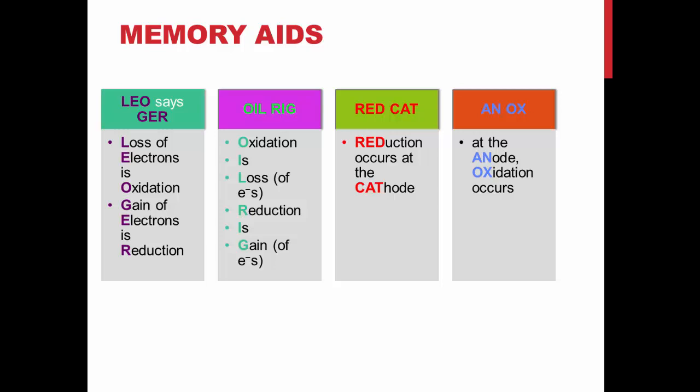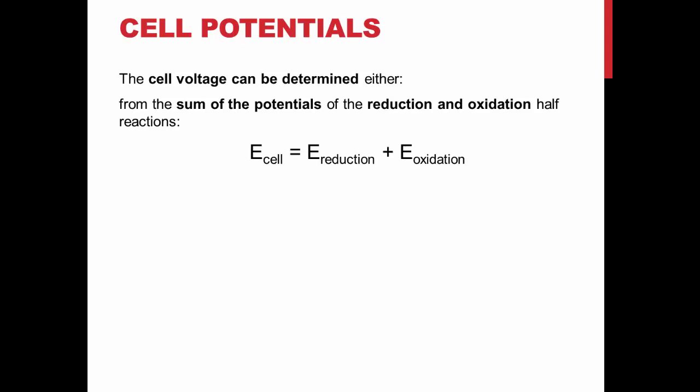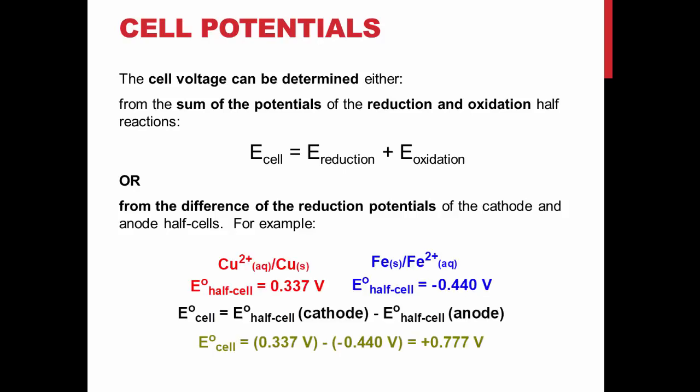The potential of a galvanic cell can be determined in two ways. First, by the sum of the potential of the reduction and oxidation half-reactions. Both of these should be positive values. Second, the difference of the reduction potentials of the cathode and anode can be used. These are the voltages produced when both reactions are written as reductions. In this case, the value for the reduction is positive, and the value for the oxidation is negative.